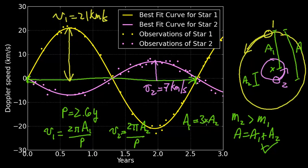From the law of gravity, if the speed of one star is larger by a factor of three, then its mass is less by that same factor. So this also immediately implies that M2 is three times the mass of M1, consistent with M2 being greater than M1. Knowing V1, P, we can find A1 and A2, then A, and together with P we can find the mass of the stars. In a second video, I will continue with this calculation.